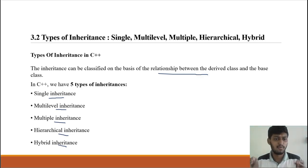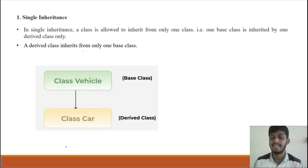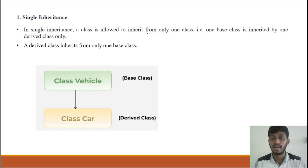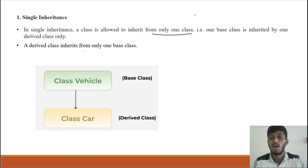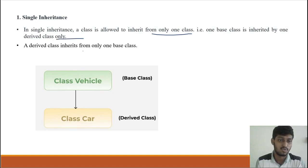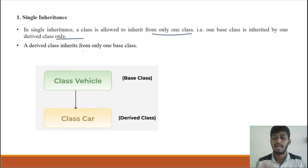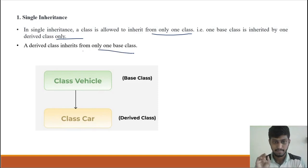I have given an overview of what types of inheritance are. The first one is single inheritance. In single inheritance, the class is allowed to inherit only one class. The derived class should only be derived from one class — one base class is inherited by one derived class only. A derived class inherits from only one base class.